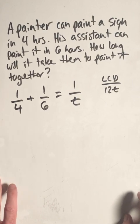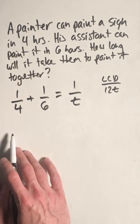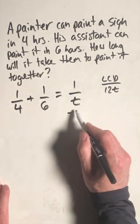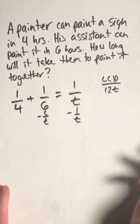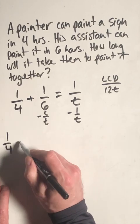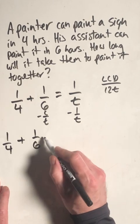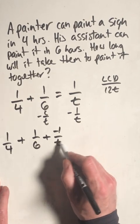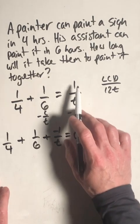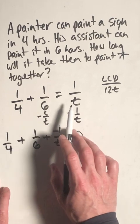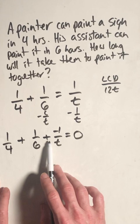So the first thing you're going to do in an equation with rational expressions is you want to get all the rational expressions on one side of the equal sign. So we basically need to subtract one over t from both sides. So we're going to get one over four, plus one over six, and now instead of subtracting one over t, we're going to add negative one over t. So all we did is move the one over t expression to the other side, but we moved it over as a negative, but we wrote that negative as the addition of a negative instead of subtracting a positive.